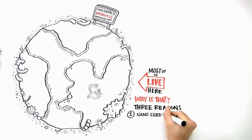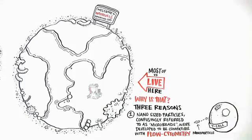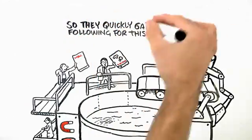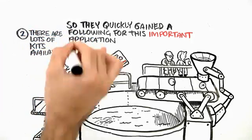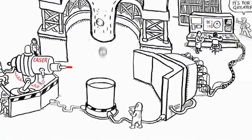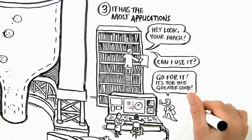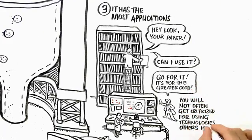There are three primary reasons. First, nano-sized particles, confusingly referred to as microbeads, were developed to be compatible with flow cytometry. So they quickly gained a following for this important application. Second, there are a lot of kits available. Third, it has the most applications. And as research scientists, you will not often get criticized for using technologies that others have used.